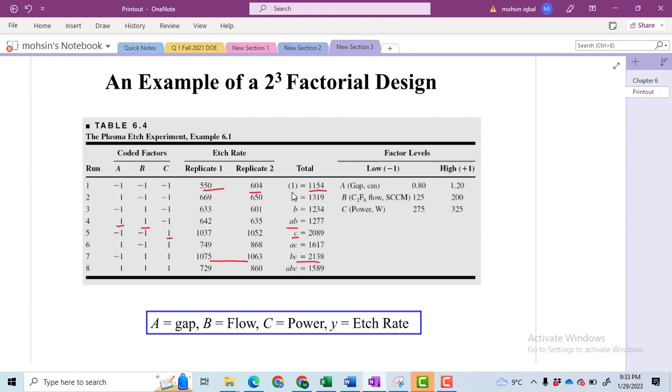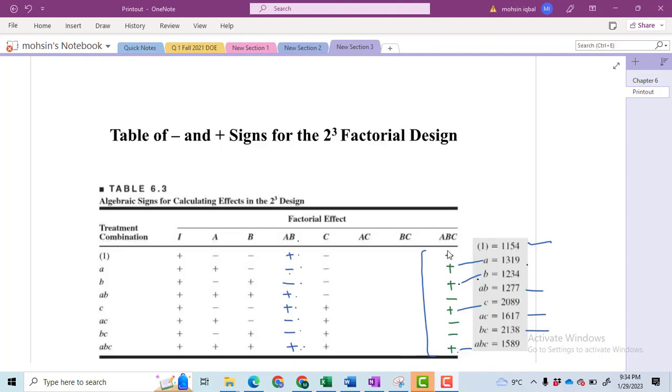This is the way that they have represented the factors. They have two levels: low with the minus one, high with the plus one. All of the three factors have been described there. To solve this problem, first of all you will have to make this design. In this design, you do not have the signs for AB, AC, BC, and ABC.